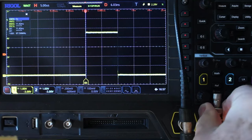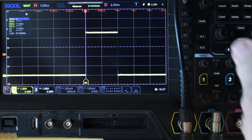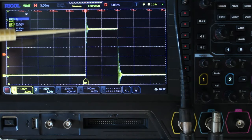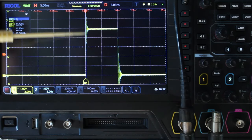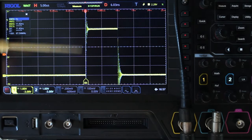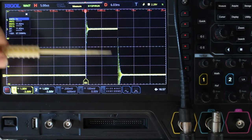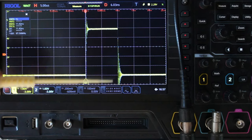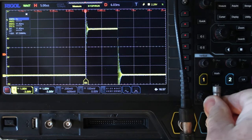And if we take that 50 ohm termination off we can see what happens to our signal here with the ringing. Every time there's a quick transition like this and it hits an improperly terminated transmission line, this is some of the stuff you get. And you can see it happens again down over here. So we'll put that 50 ohms back on.